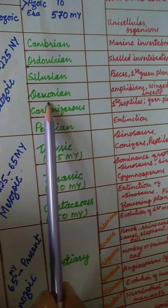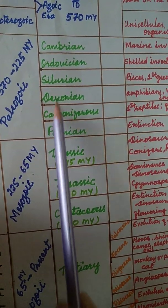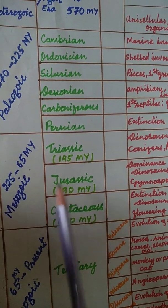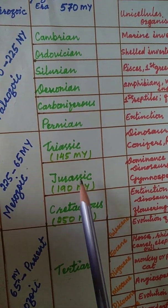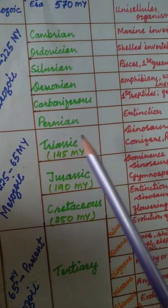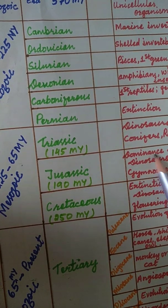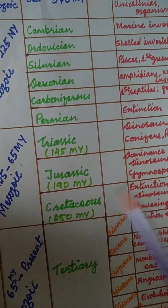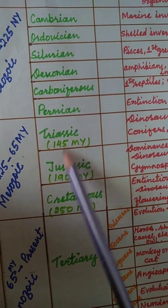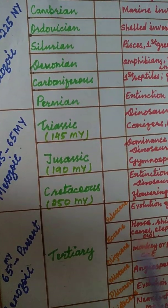Paleozoic Era is also called the Era of Amphibians because amphibians dominated the Earth's surface during this time. Mesozoic Era is also called the Era of Reptiles or the Era of Creepers because reptiles and dinosaurs dominated. In the Mesozoic Era: Triassic period — dinosaurs originated; Jurassic period — dinosaurs evolved and developed; Cretaceous period — dinosaurs went extinct.